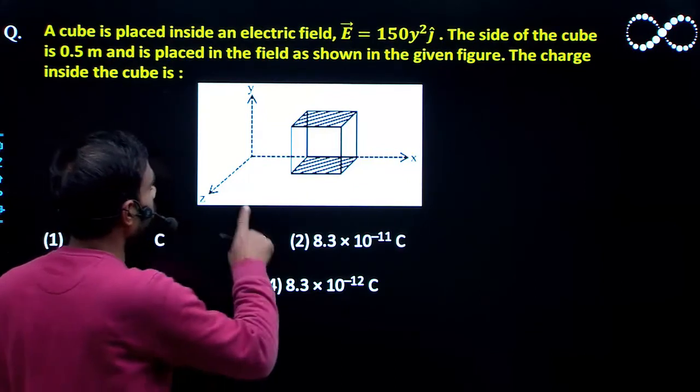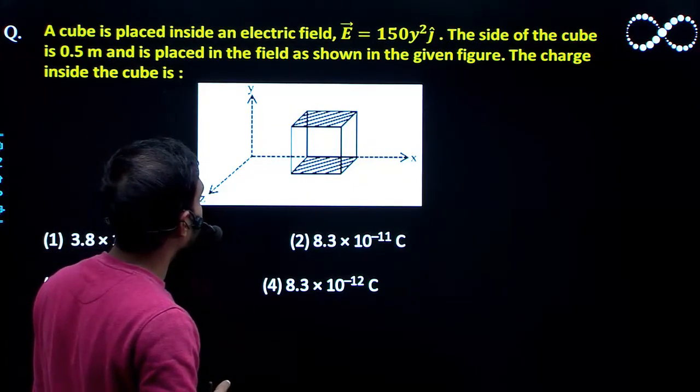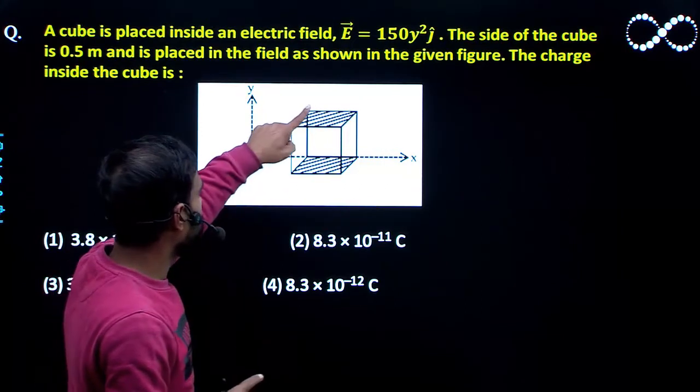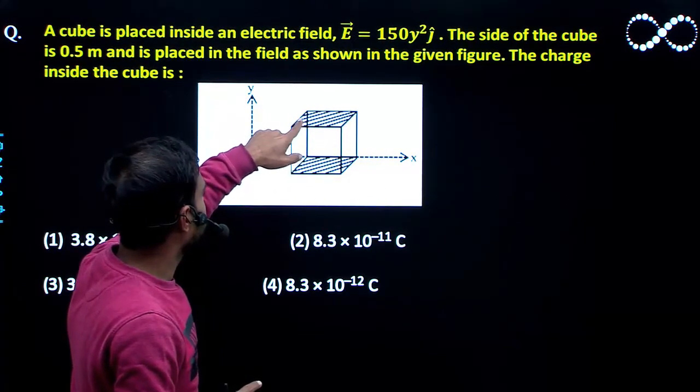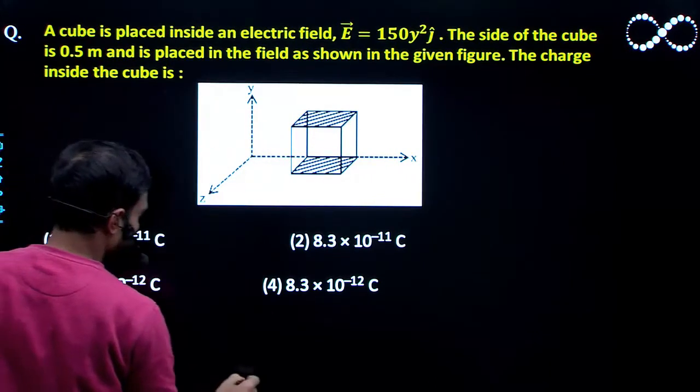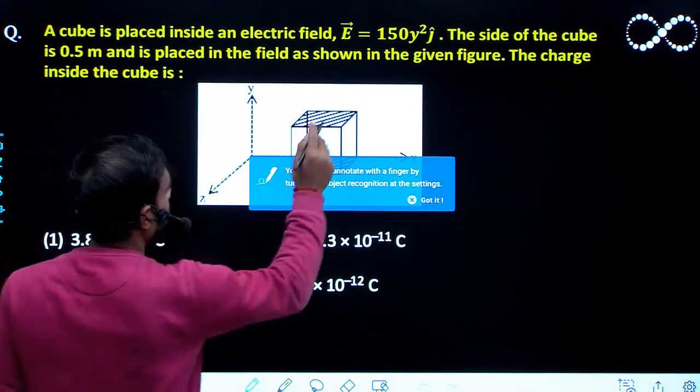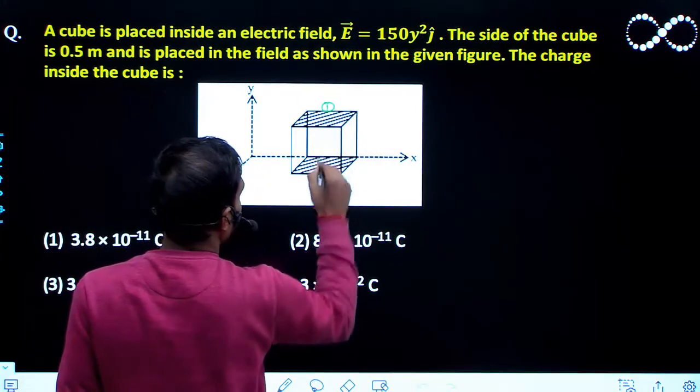So see, the electric field is in the j direction. So the flux will come only due to the top and bottom surface which is darkened here. So let us call this face as... I am naming this face as 1 and this face as 2.